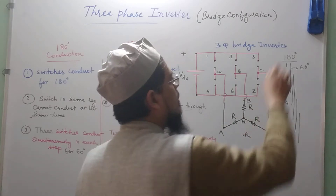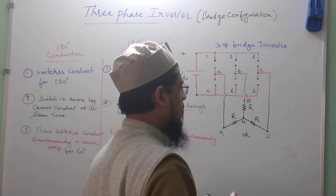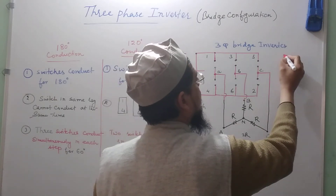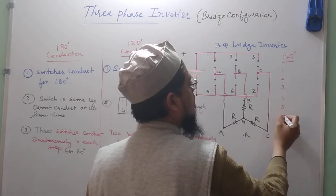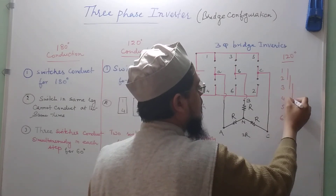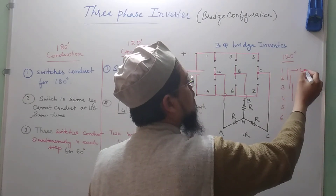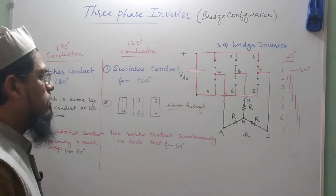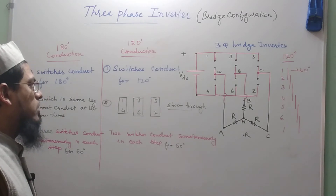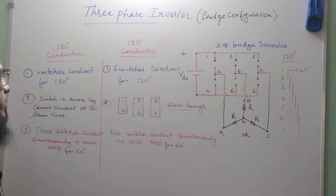While in 120-degree conduction mode, 2 switches conduct simultaneously in each step. The steps are: 1-2, 2-3, 3-4, 4-5, 5-6, and 6-1, and each pair conducts for 60 degrees. This was the difference between the two types of conduction in the three-phase bridge inverter.